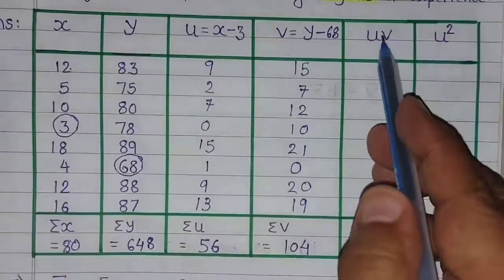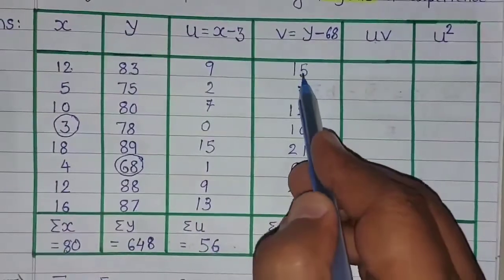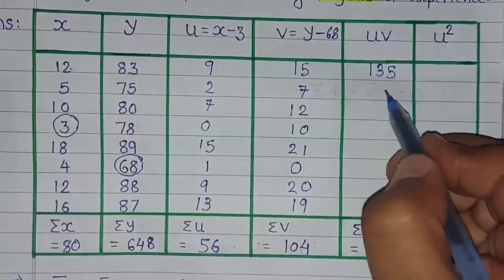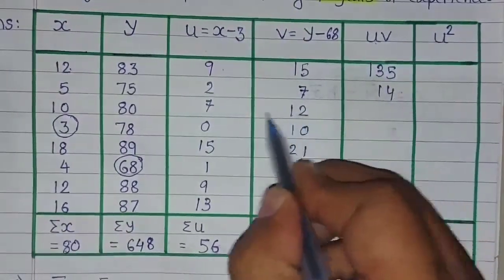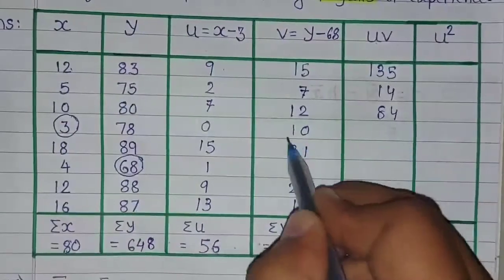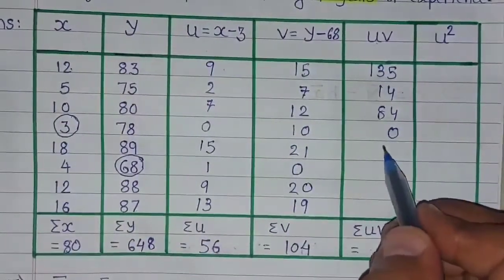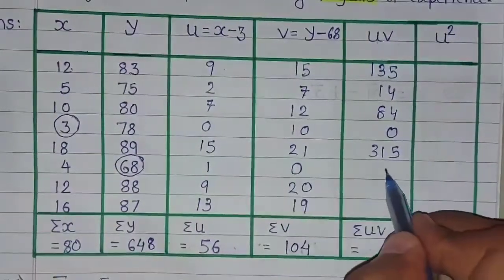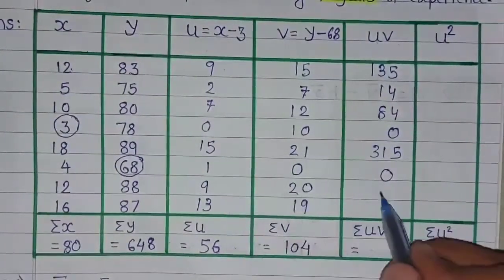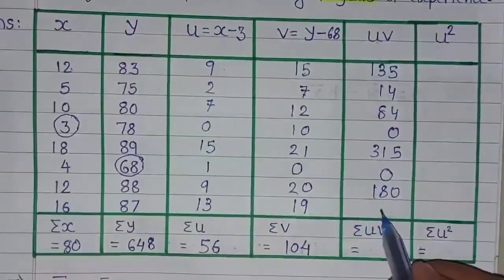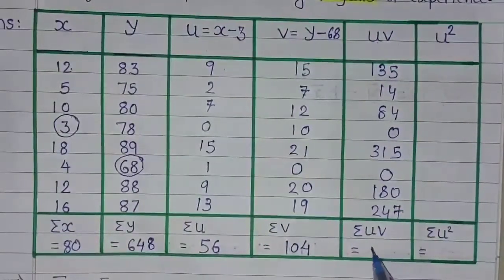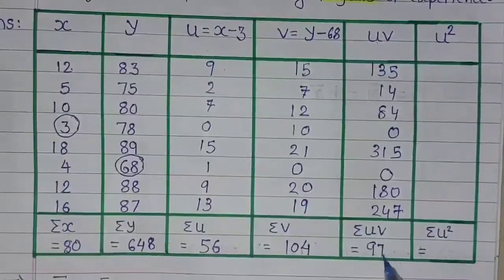Now we want the product of u and v. So 15 into 9 is 135, then 7 into 2 is 14, 12 into 7 is 84, 10 into 0 is 0, 15 multiplied by 21 will be 315, 1 into 0 is 0, 9 into 20 is 180, and 13 into 19 will be 247. The sum of uv, meaning sigma uv, will be 975.